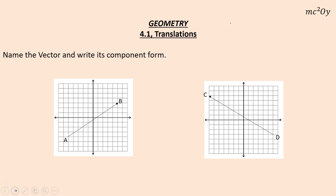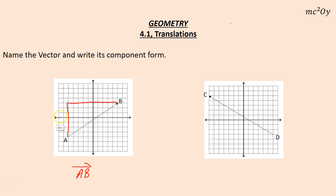It says: name the vector and write its component form. This vector starts at A and ends at B — notice the arrow at the end at B, so it's called vector AB. We are actually rising and running on this one: rising 7 and running 10. So in component form, we'd write it as the change in X (horizontal component) 10, and the change in Y (vertical component) 7.